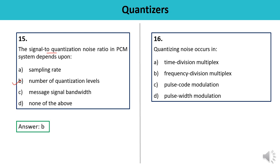Question 16: Quantization noise occurs in — TDM, FDM, PCM, or PWM? Quantization noise occurs in the case of pulse code modulation, PCM. The answer is C.